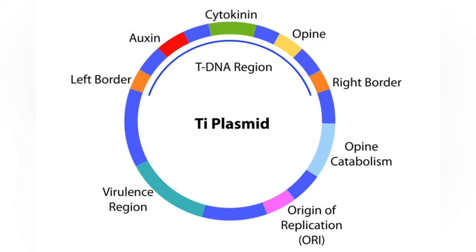A. fabrum C-58, the first fully sequenced pathovar, was first isolated from a cherry tree crown gall. The genome was simultaneously sequenced by Goodner et al. and Wood et al. in 2001.